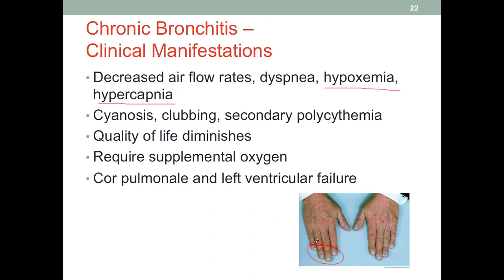Many of these individuals will require supplemental oxygen, which decreases their quality of life — they must carry an oxygen tank and use a nasal cannula to receive adequate oxygen. Many patients with chronic bronchitis, due to the impairment of their lung function, may eventually develop cor pulmonale — the term for heart disease that originates from lung problems — and also left ventricular failure. These two conditions were mentioned when studying congestive heart failure.